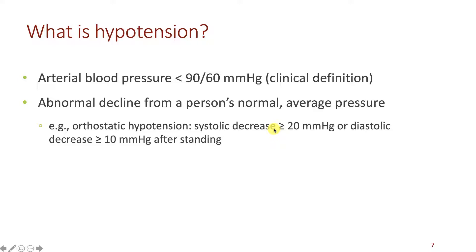What is hypotension? We have already learned that our normal arterial pressure in an adult is less than 120 over 80 millimeters of mercury. But what about the lower end? A clinical definition for abnormally low blood pressure, or hypotension, is a systolic pressure of less than 90 and a diastolic pressure of less than 60 millimeters of mercury. Another caveat is that hypotension can be viewed as any abnormal decline from a person's normal average pressure.